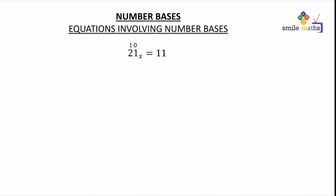We first label 21 from right to left, which is going to be 0 and 1. So this gives us 2 times the base x to the power 1 plus 1 times the base x to the power 0, and this is equal to 11, which is already in base 10.